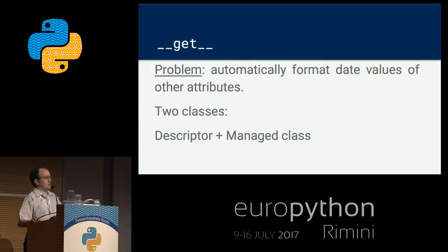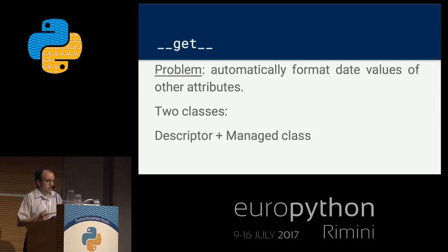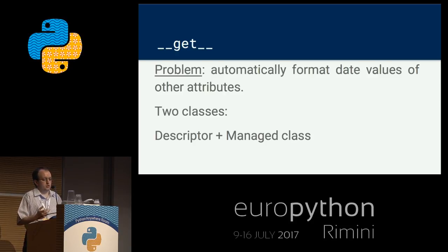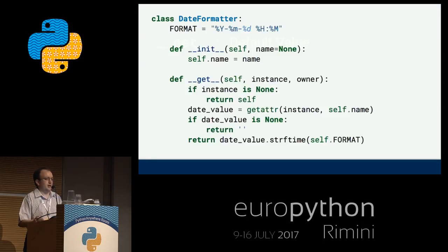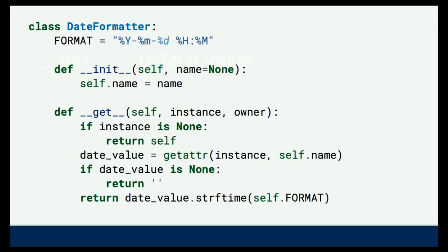Let's start with something simple: a non-data descriptor. The problem I have is an object with some attributes where I want to automatically run some computations on those attributes — kind of like a property — but there are many attributes. If I want to use a property, I will have to repeat the code many times. So I'll use descriptors. This means I'll need to create at least two classes: one for the descriptor itself, and another called the managed class.